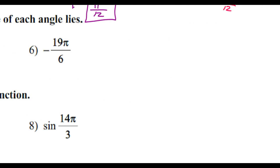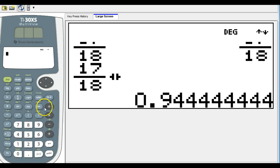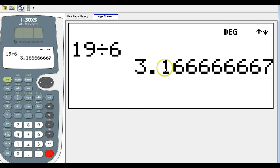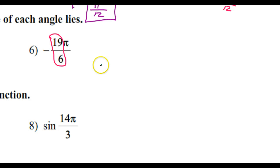Let's look at number six. Let's find this quadrant. Again, it is easy if you look at the decimal form. So even on a four-function calculator, 19 divided by 6. So that's 3.2. It's approximately 3.2. That means this is approximately negative 3.2 pi.